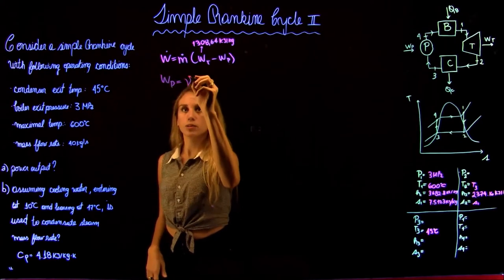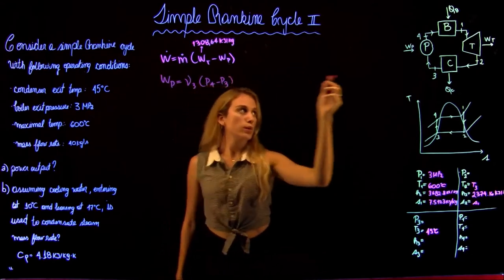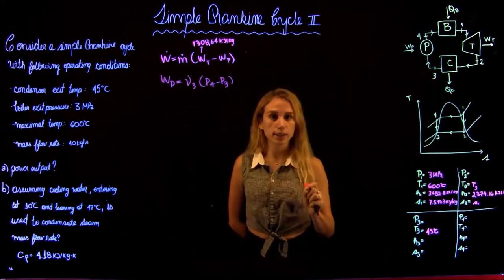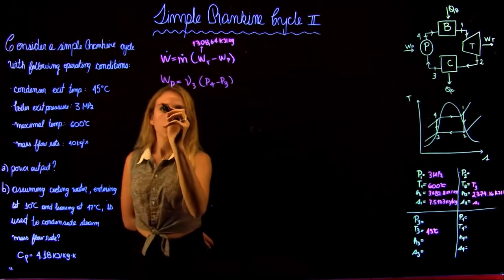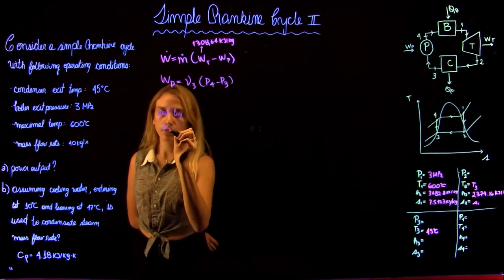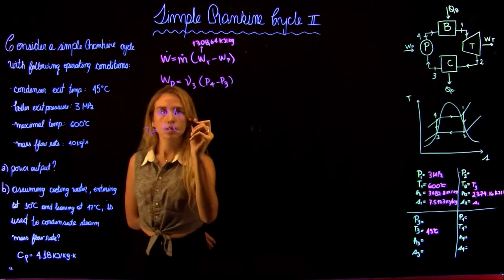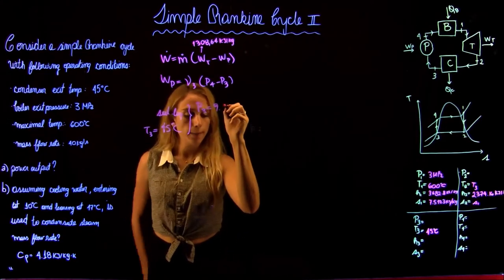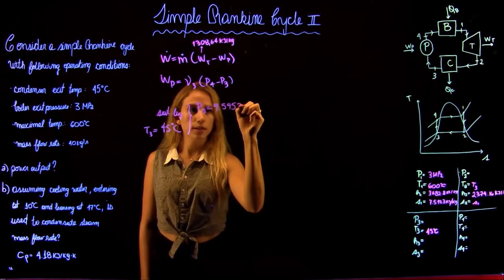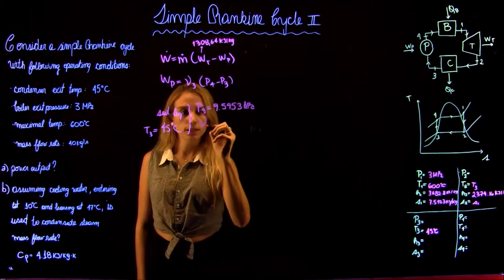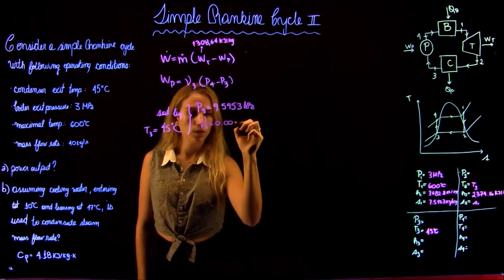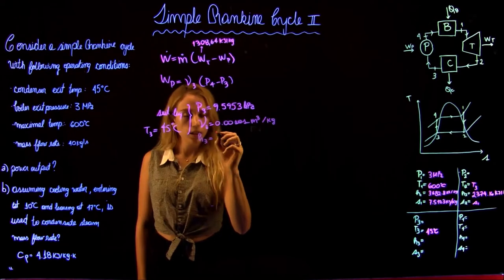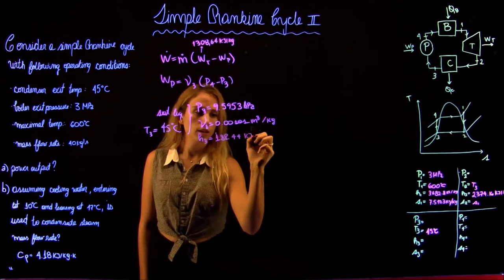The work of the pump is equal to the specific volume times the pressure change, so v × (P4 − P3). At state 3 we have a saturated liquid exiting the condenser at 45 degrees Celsius. From the tables we obtain: P3 = 9.5953 kPa, specific volume v = 0.00101 m³/kg, and enthalpy at state 3, H3 = 188.44 kJ/kg.